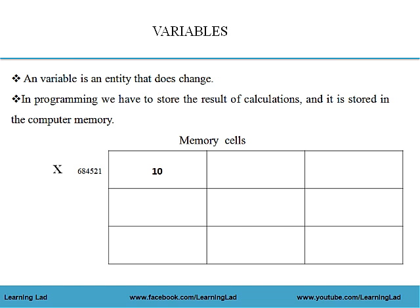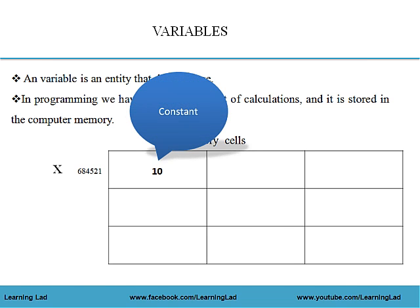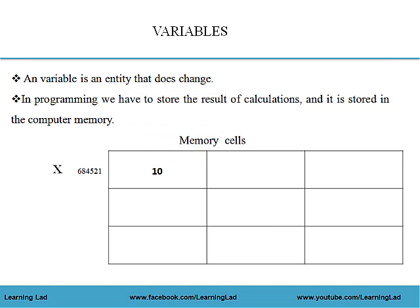As you can see in the figure, 684521 is the address of the memory cell which contains the constant 10. To make the usage of this memory cell easy, we give that memory cell a name. Here, x is the name given to this memory cell. So 10, which is stored in the memory cell named x, is a constant.